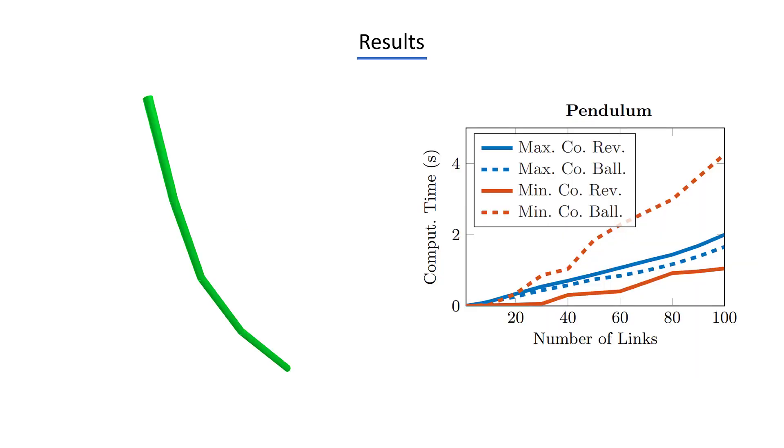We've compared our maximal coordinate algorithm to an algorithm in minimal coordinates, both were written in Julia. For this comparison, we looked at n-link pendulums, like the one you see on the left, going from one link to a hundred links, and we chose two different joint types, revolute joints with one degree of freedom, and ball and socket joints with three degrees of freedom. On the right, you can see the results, where our algorithm is in blue, and the minimal coordinate one in red. The revolute joints are the solid lines, and the ball and socket joints are the dashed lines. Of course, the minimal coordinate algorithm is the fastest for revolute joints, because a system with only revolute joints is the ideal situation for minimal coordinates, but our algorithm still performs reasonably well.